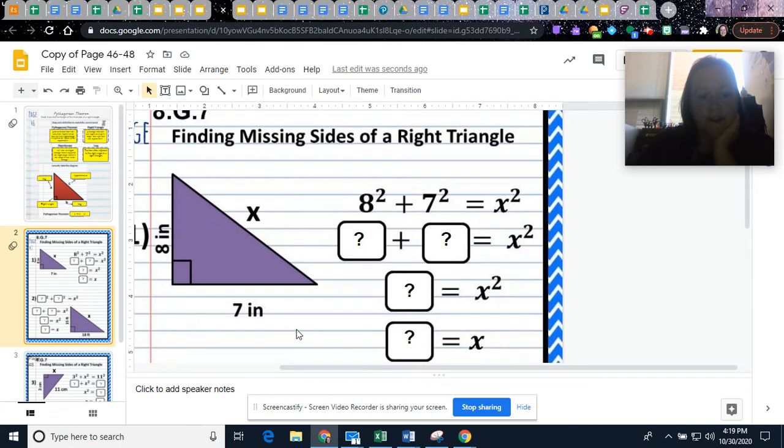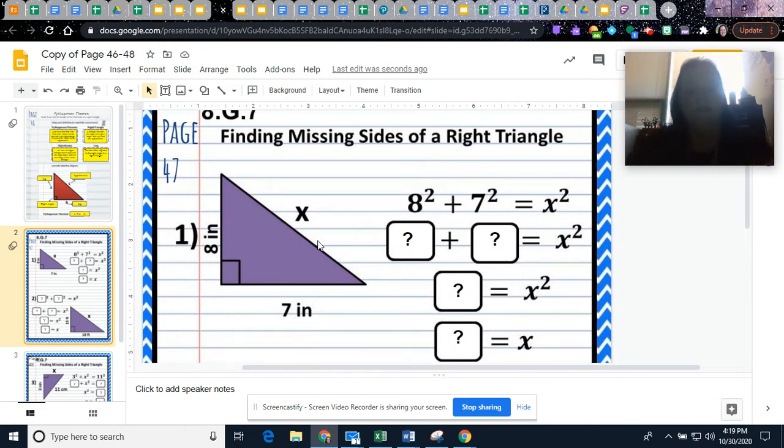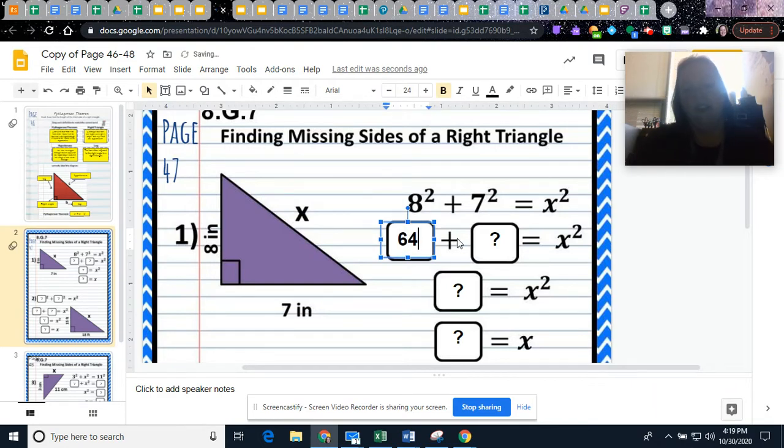We're going to find the missing side of the right triangle. We know that the Pythagorean theorem is A squared plus B squared equals C squared. When we look at this triangle, we know A and B because they make the right angle. So we know it's C that we need to find. One of your legs is 8 inches and the other one is 7 inches. You'll see that we've plugged them in. 8 squared, so 8 times 8 is 64. 7 squared means 7 times 7 is 49. We don't know what X squared is yet, so we just leave it alone.